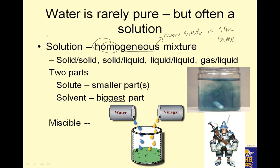Solutions can be a solid and a solid — that's an alloy, like steel or bronze. A solid and a liquid is like salt water, like we did today in class. Liquid and a liquid: here's water and vinegar — they mix and they dissolve. A gas and a liquid is like a carbonated beverage, where you have carbon dioxide and water.